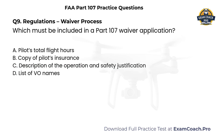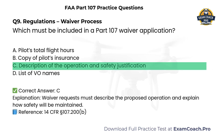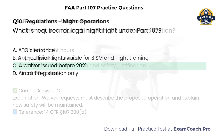Regulations. Waiver process. Which must be included in a Part 107 waiver application? A. Pilot's total flight hours. B. Copy of pilot's insurance. C. Description of the operation and safety justification. D. List of visual observer names. Correct answer: C. Waiver requests must describe the proposed operation and explain how safety will be maintained.